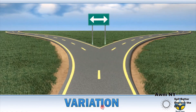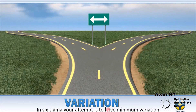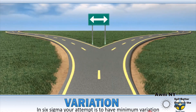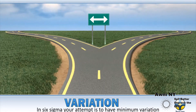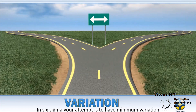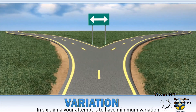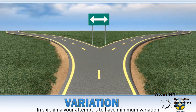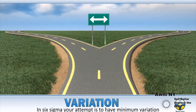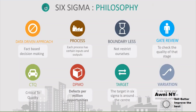The eighth philosophy of Six Sigma is variation. Anything will have variation, but in Six Sigma your attempt is to have minimum variation. The goal is to minimize variation in the process so that you deliver consistent products or consistent services to your customer.